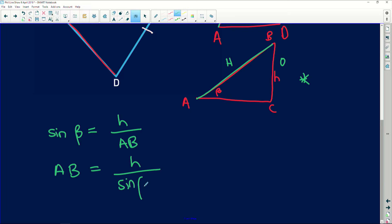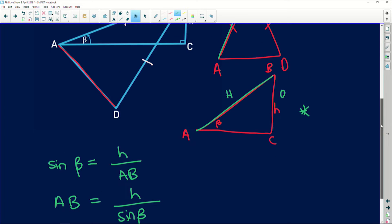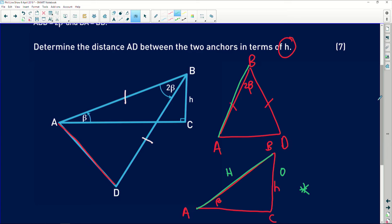Okay, so now we have a little bit more information up here. We say that this is h over sine of beta. Now remember, these two were given as equal, so this is also h over sine of beta. Okay.